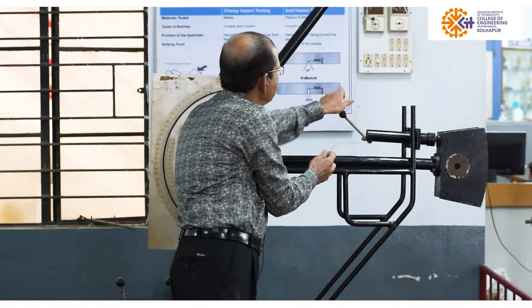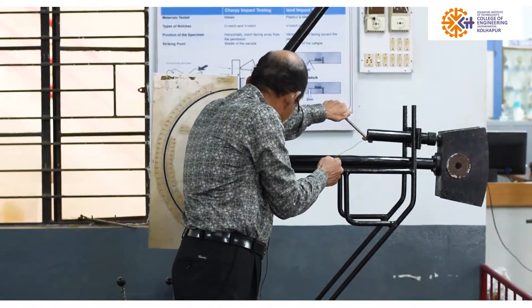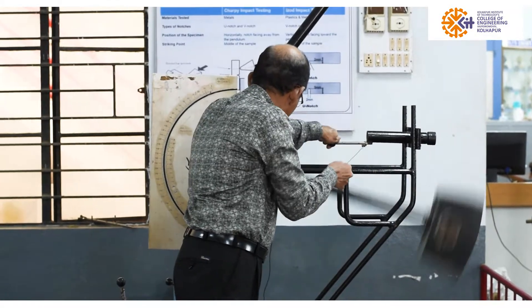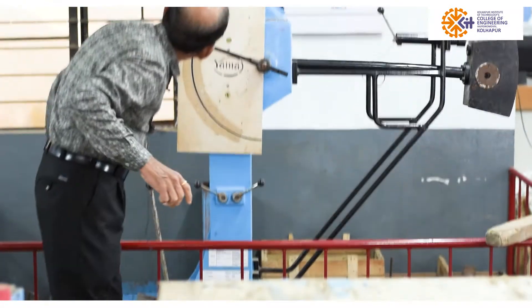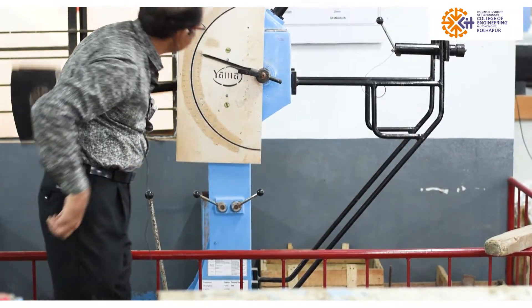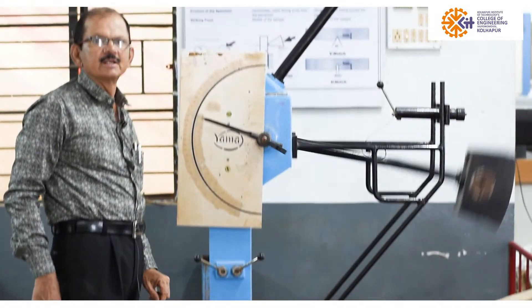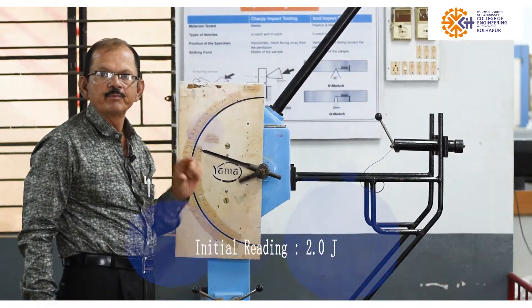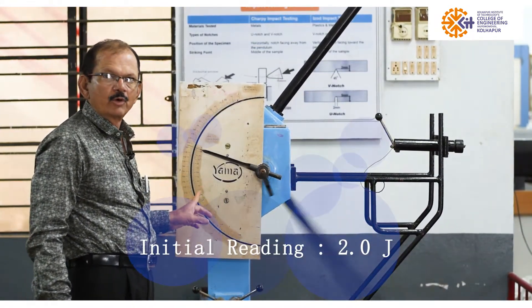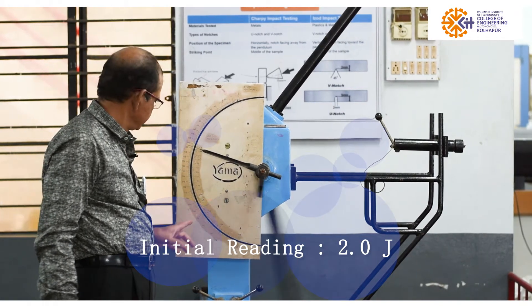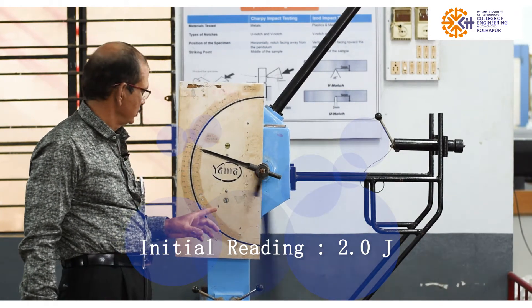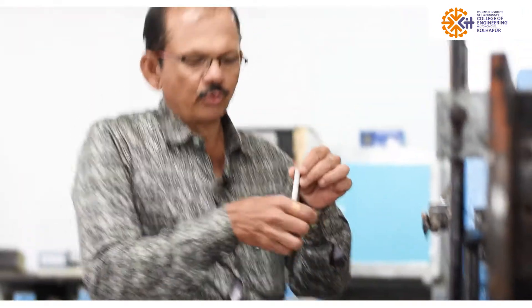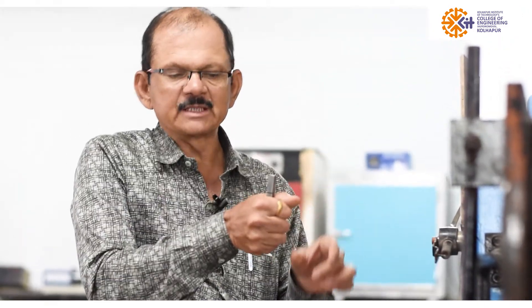We release the hammer for the free fall check. There is a difference of two divisions — two joules — for the Izod test due to friction loss.